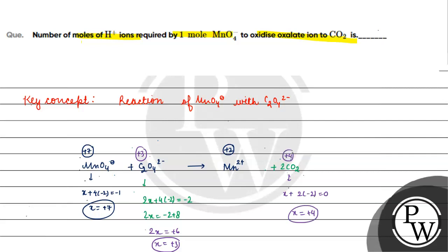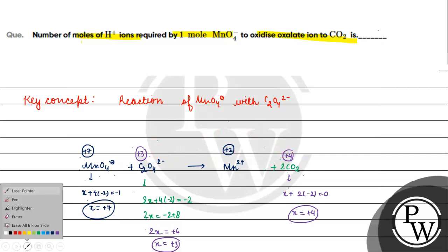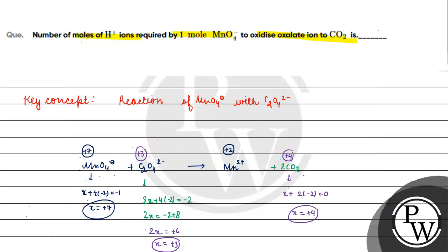There are 2 carbon atoms in oxalate. Each carbon increases in oxidation state by +1 (from +3 to +4), so for 2 carbon atoms the total increase is +2. This means 2 electrons are involved in oxidation.